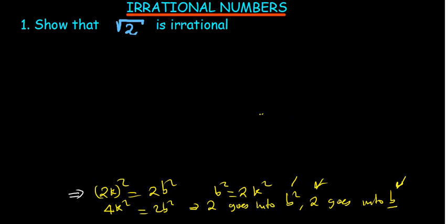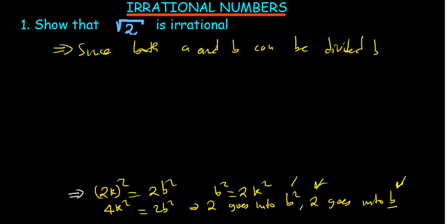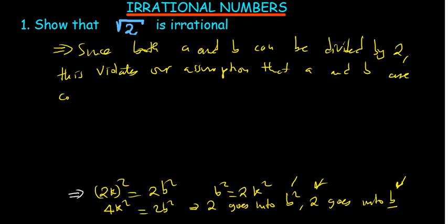We can now conclude. Since both A and B can be divided by 2, this violates our assumption that A and B are co-primes. At the beginning, when we said let root 2 equal A over B, we should have stated that A and B are co-primes. Since both A and B are divisible by 2, this contradiction means root 2 is irrational.